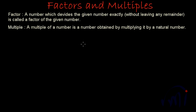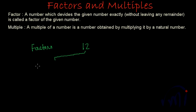Suppose if I take 12. So 12 is a number and if I talk about its factors, a factor is a number which divides this number exactly, that means without leaving any remainder. Since 12 is an even number, 2 will be one of its factors. When we divide 12 by 2, we get 6. So 6 is also a factor.